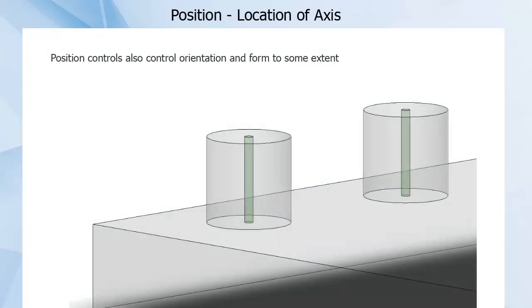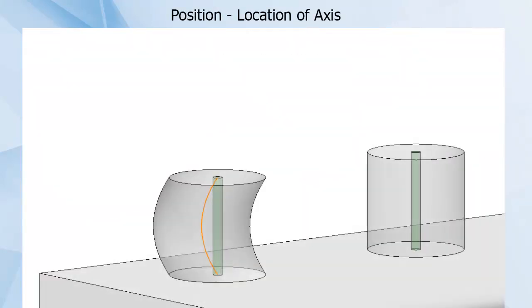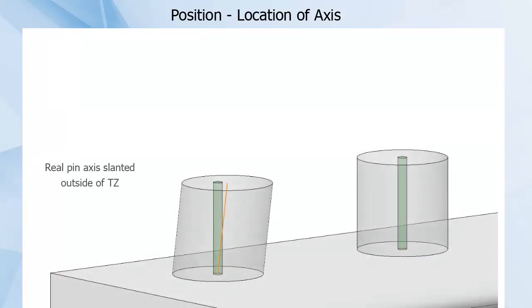You will see here that the shape of the tolerance zone automatically gives some control over the orientation of the feature, as well as some limitation to the form of the feature. A pin could not be too bent without the axis leaving the tolerance zone, and could not be at too much of an angle without leaving the tolerance zone.